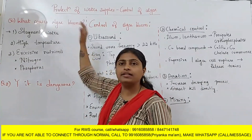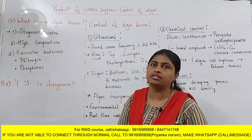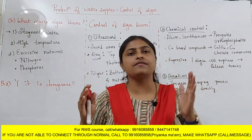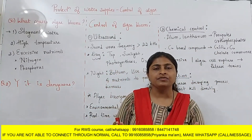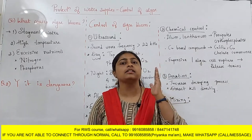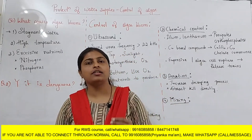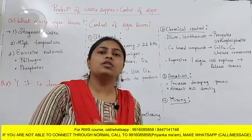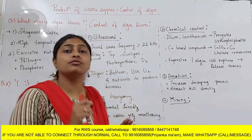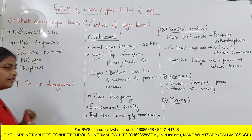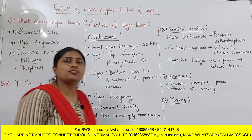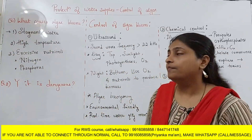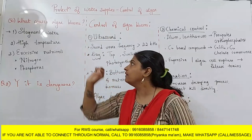What are the different reasons for the growth of algae? The first one is stagnant water — if the water keeps on stagnating, which is mostly in reservoirs, lakes, and ponds, that is one of the reasons. For running water, usually there is no growth of algae. Then, if the temperature is very high — in warm weather or in summer — the growth of algae is more.